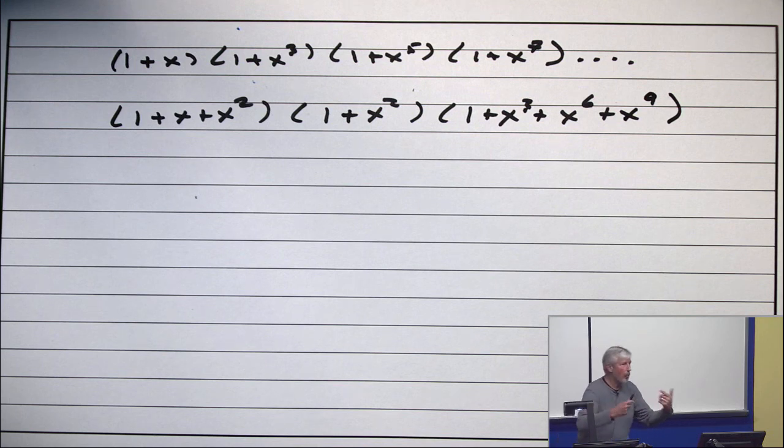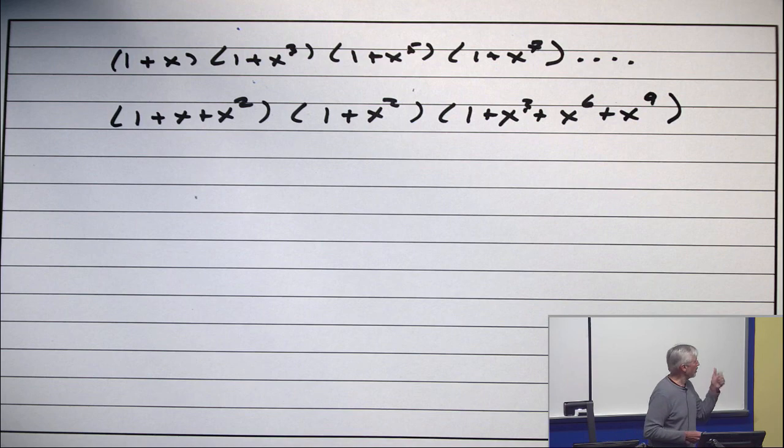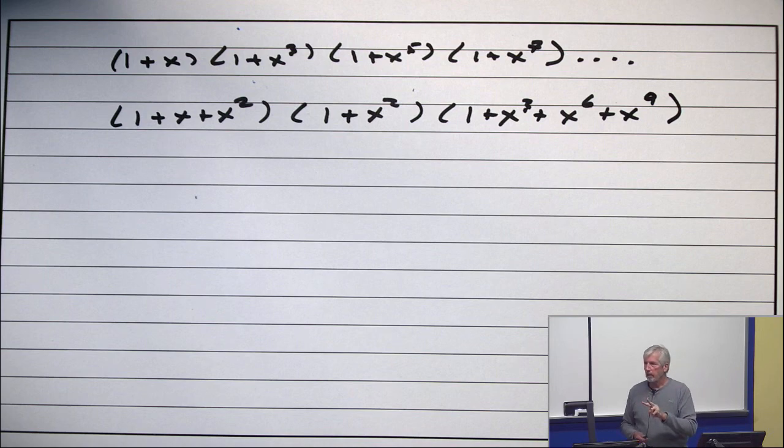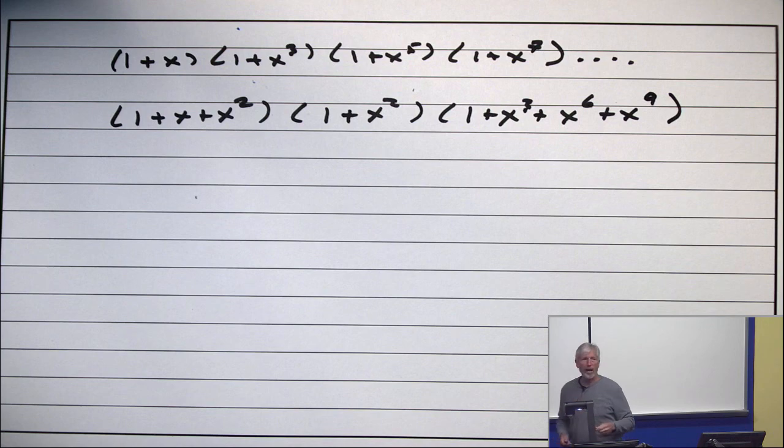But I can say in words what all the coefficients are. Again, partitions of an integer n in which if you look at the parts of size 1, there are either none of them, one of them, or two of them. I get those from the first term. If you look at the parts of size 2, there are either none of them or one of them, 0 or 1. Parts of size 2. Parts of size 3, there are either none of them, 1, 2, or 3.